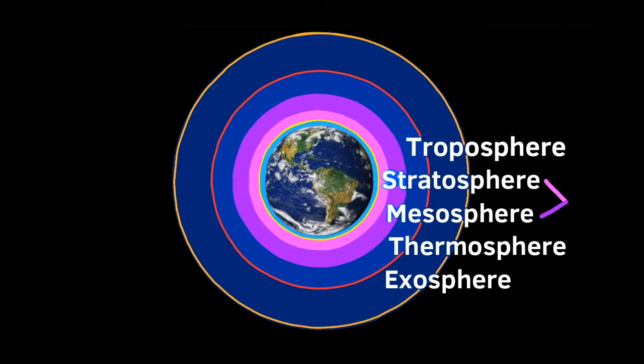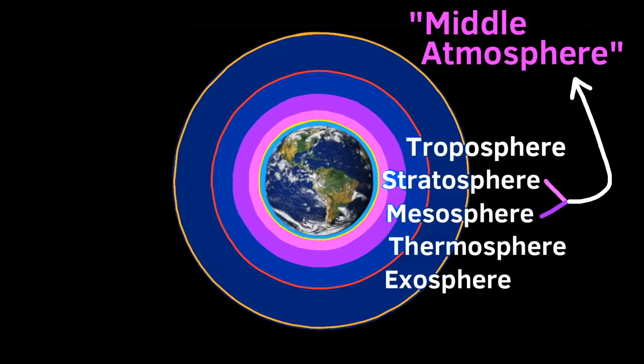The mesosphere protects the Earth from meteors and asteroids by burning them up before they can reach its surface. Together, the stratosphere and mesosphere are often referred to as the middle atmosphere.